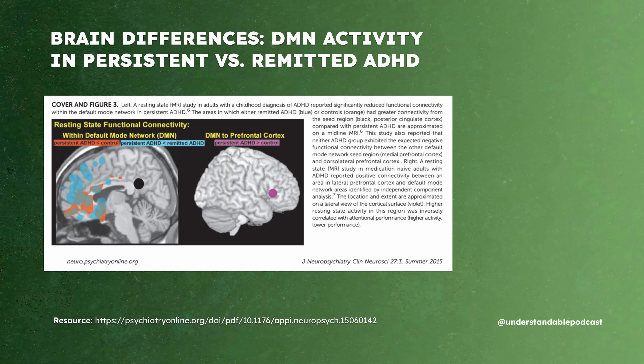We see higher brain activity in people with remitted ADHD. There's a study linked below comparing activation of the DMN in persistent ADHD versus remitted ADHD. In orange on the left image, you can see less activation in persistent ADHD brains. In blue, you can see more activation when ADHD is remitted.